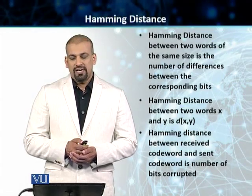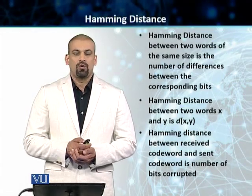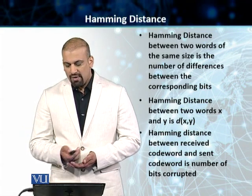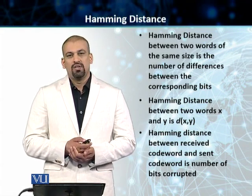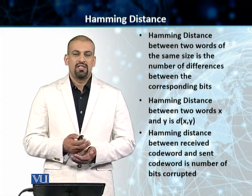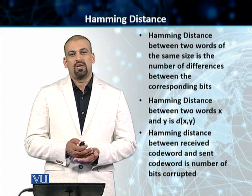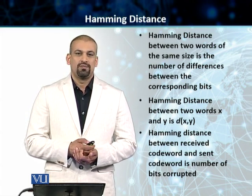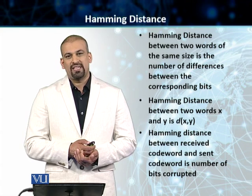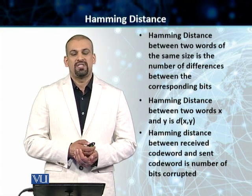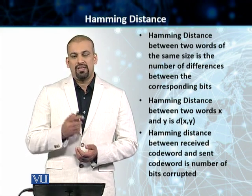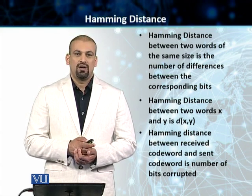Students, related to the concept of block coding is this concept of Hamming distance. The Hamming distance between two words of the same size is the number of differences that exist between the corresponding bits of these two words. If you are comparing two words x and y, then we represent this Hamming distance by an italic d and then within brackets x comma y.